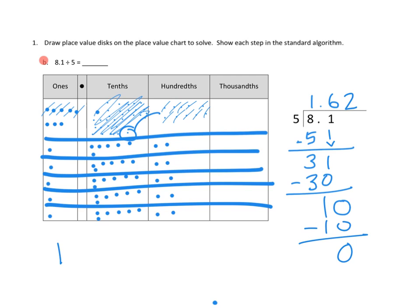The answer is 1.62, because each group has 1 one, 6 tenths, and 2 hundredths — and I can see the very same thing in the standard algorithm. We have no remaining dots to decompose into thousandths, and no remainder. The place value division and the standard algorithm both give the same result.